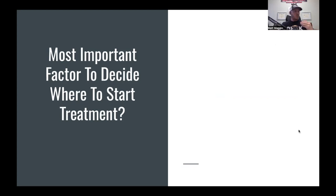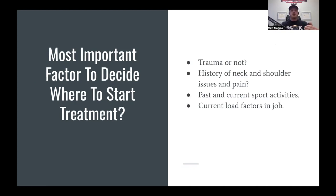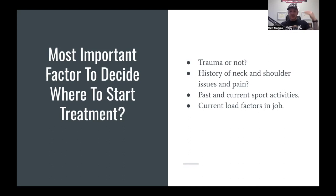The most important factor in deciding where to start is whether there's trauma or not. If someone presents with what I think is carpal tunnel syndrome but has no history of elbow or wrist trauma, I'm more than likely thinking it's coming from higher up — usually the shoulder or the neck. If I start asking and they've had shoulder issues over the years, neck pain, neck tightness, or neck soreness, I'm thinking that nerve is getting compromised higher up in the chain. Their past and current sports activities and current job load help me get a better idea of what's going on.